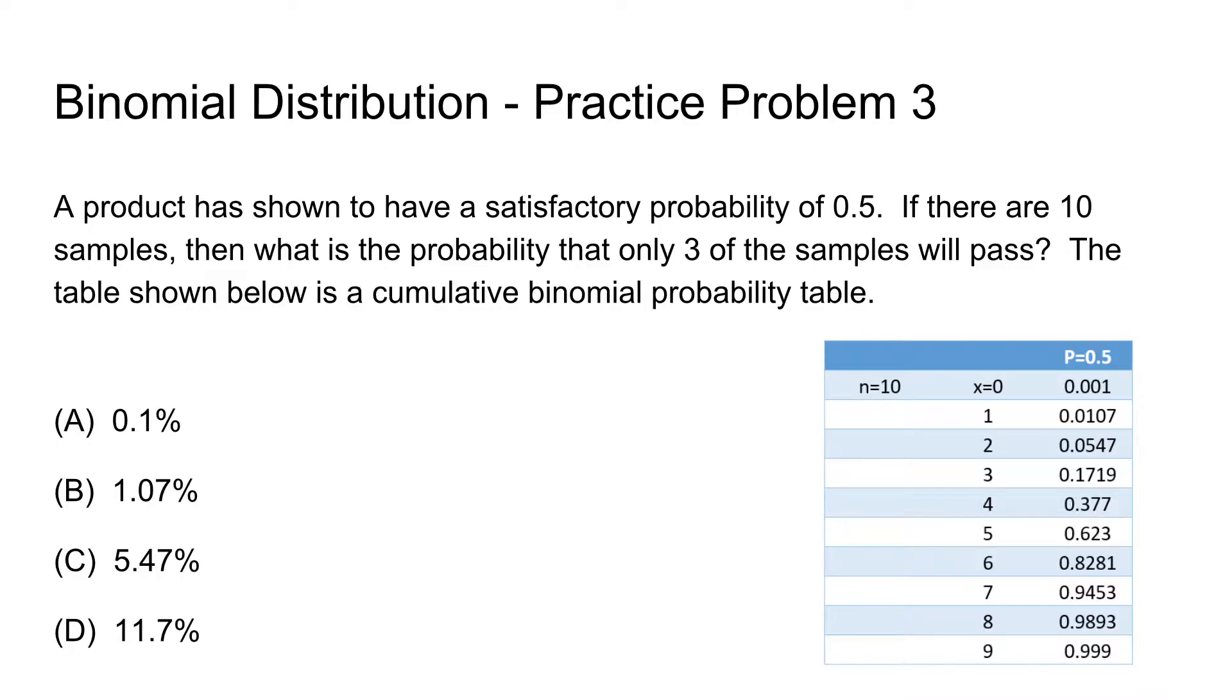So this is a binomial distribution problem, and it reads: a product has shown to have a satisfactory probability of 0.5. If there are 10 samples, then what is the probability that only 3 of the samples will pass?